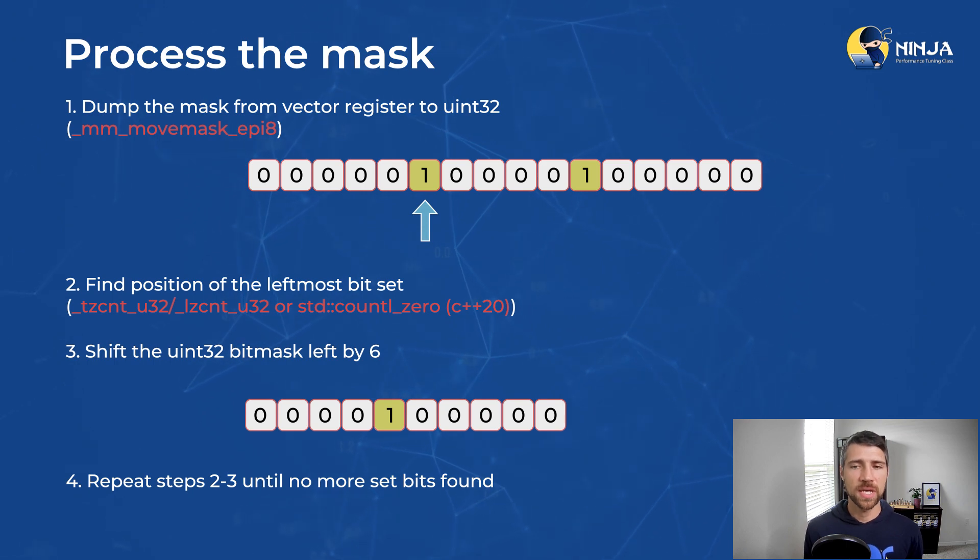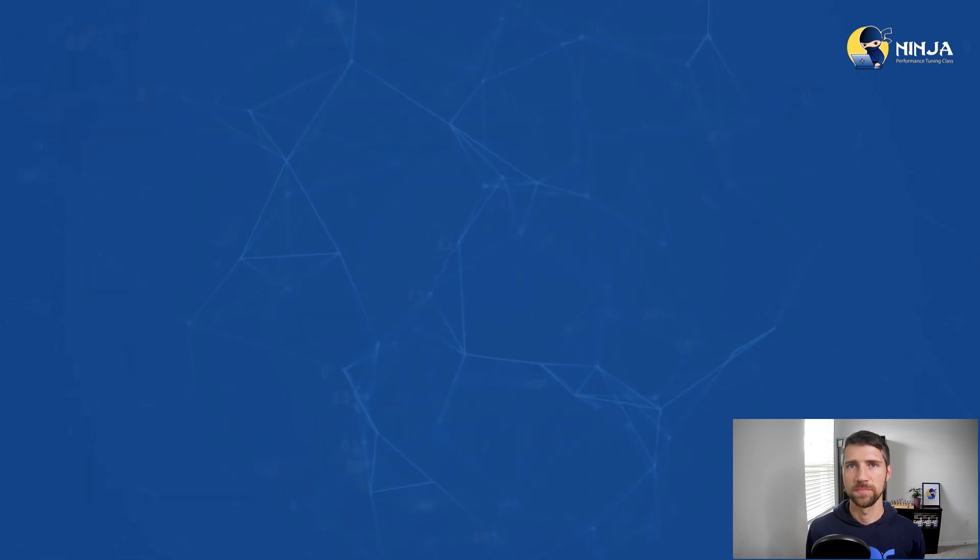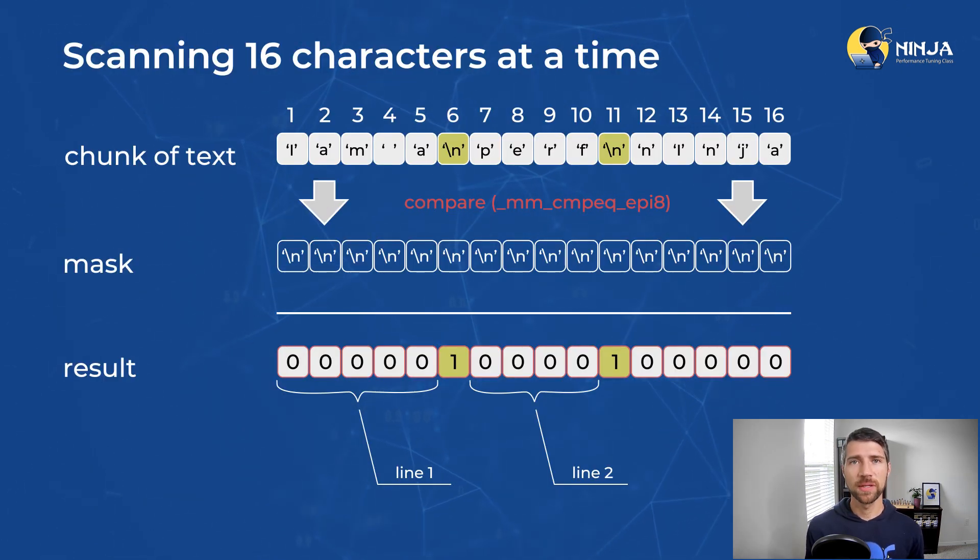Keep in mind the edge case when the chunk of text doesn't end with the end of line character. Well, basically in this case, you don't know where the line will end. And so you need to carry over that information into the processing of the next chunk of text. And so in this example, you will increase the length of the next line that you will find by five characters. All right. I hope the algorithm is clear to you.